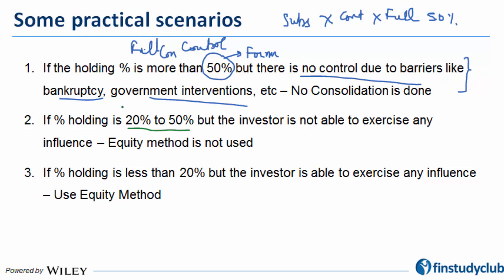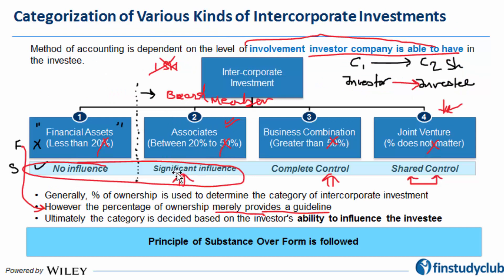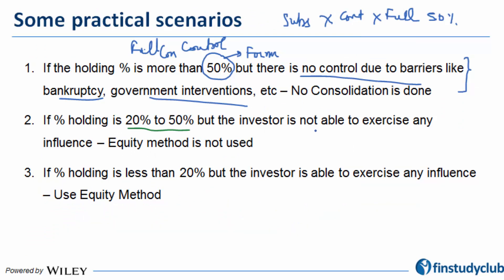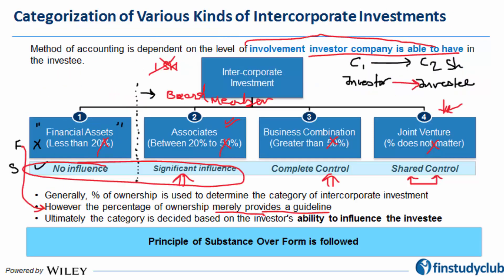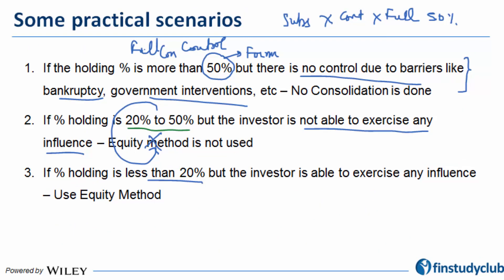Second example: if the holding is between 20–50%, that suggests significant influence and the equity method should apply. But if the investor is not actually able to exercise any influence, the equity method will not be followed. Conversely, if the holding is less than 20% but the investor is one of the large shareholders and gets board representation, equity method may still apply with less than 20% ownership.